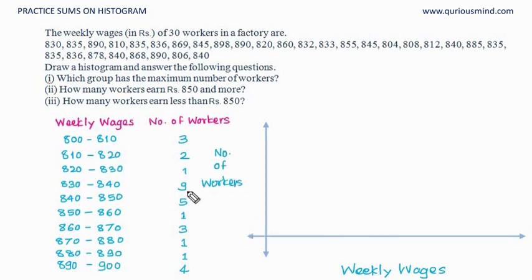For the scale for number of workers, we have the highest frequency is 9. So we will divide it into 1 to 10.